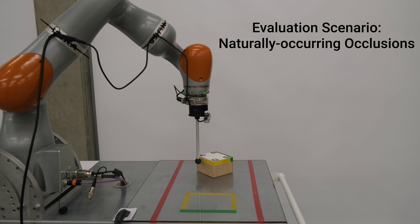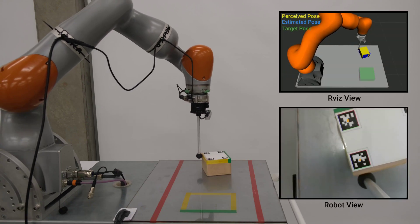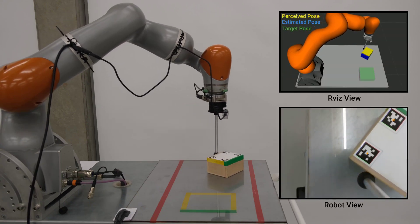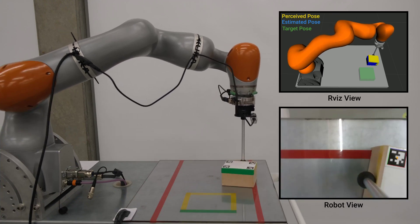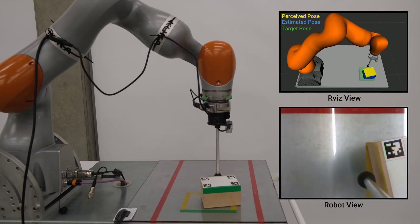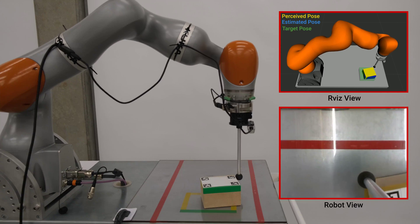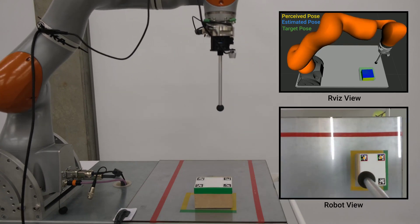Our first evaluation scenario considers naturally occurring occlusions that arise due to the onboard perception. On the right, we show the RViz view with the perceived and estimated object poses. We also show how the robot camera view can occlude the reading of the box pose. Note that we perform zero-shot sim-to-real transfer to deploy the learned estimator and control policy in hardware.